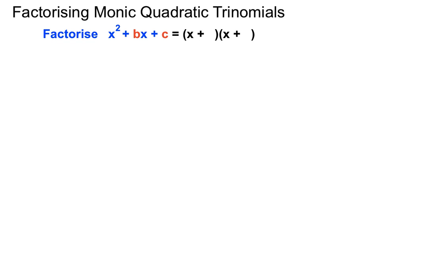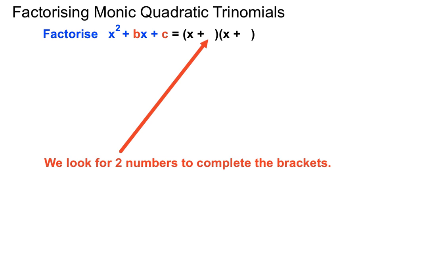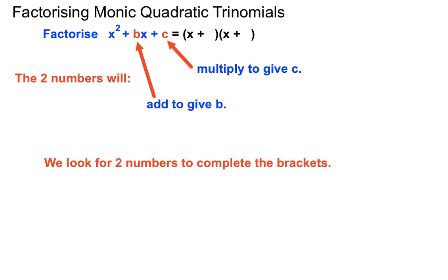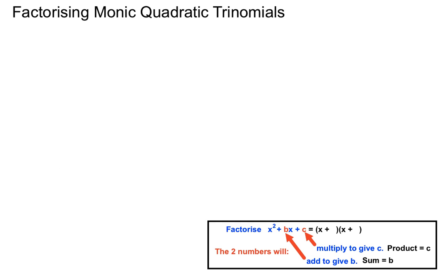To factorise this, we turn the expression into two brackets, each starting with x, and we look to fill in the remaining spaces. The two numbers we look for have a product equal to c — the number on its own — and a sum equal to b — the number in front of x. We call this the PSF method: product equals c, sum equals b. That's the basis of our system.